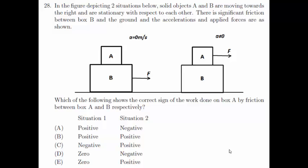The options are A positive for situation 1 and negative for situation 2, B positive for both situations, C negative for situation 1 and positive for situation 2, D zero for situation 1 and negative for situation 2, or E zero for situation 1 and positive for situation 2.